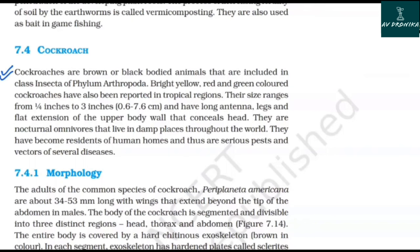Cockroaches are arthropods with drab-colored bodies. Brightly colored yellow, red, and green cockroaches have also been reported in tropical regions. Their size ranges from 1/4 inch to 3 inches (approximately 0.6 to 7.6 cm). They have long antennae, legs, and a flat extension of the upper body wall that conceals the head. They are nocturnal omnivores that live in damp places throughout the world and have become residents of human homes, making them serious pests and factors in several diseases.